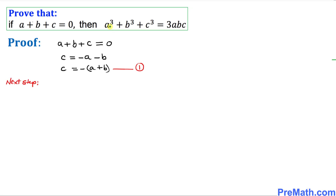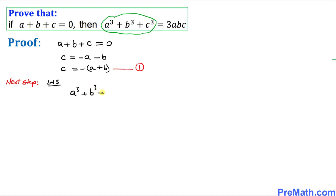In the next step, this is what we have to show: that a³ plus b³ plus c³ equals 3abc. Let me go ahead and write down the left-hand side that we need to show, which is a³ plus b³ plus c³.